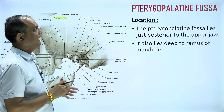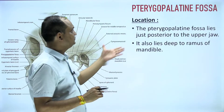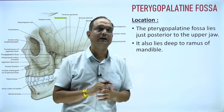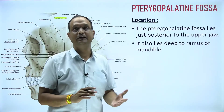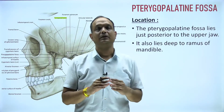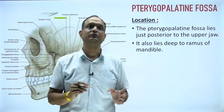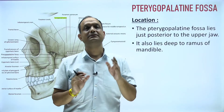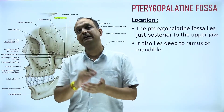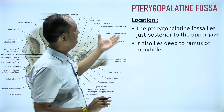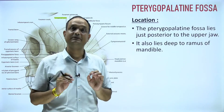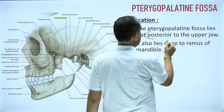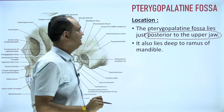The first question is: where will you find this fossa? This fossa is a hidden area — it is not visible in the norma lateralis. You are able to see only a small opening on the lateral side. It lies deep behind the maxilla, so always keep in mind that the pterygopalatine fossa lies behind the maxilla or your upper jaw.